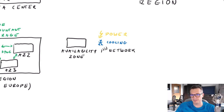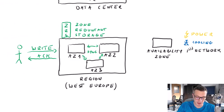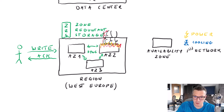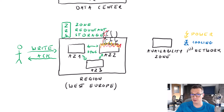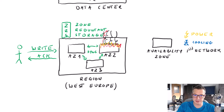The idea is that availability zones are quite independent from each other — different physical locations, different buildings, different data centers. If something bad happens to one of them, like a fire, our data is not lost because the remaining two copies are stored in different physical locations. Having independent power, cooling, and network gives us another advantage — if a construction worker cuts a network cable nearby, the remaining zones are unaffected. ZRS simply protects us from data center failures.